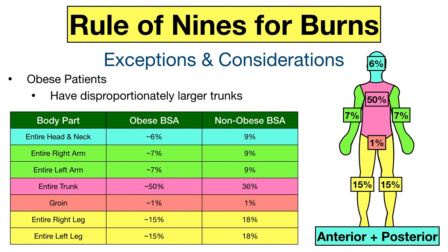The rule of nines can be applied to non-obese adults. Patients defined as obese based on their BMI have disproportionately larger trunks, and the rule of nines is typically inaccurate for them. The body surface area of the trunk in obese patients can be closer to 50% compared to their non-obese counterparts with a trunk of 36%. Due to their disproportionate trunk size, the other body surface area percentages are slightly different in obese patients, as you can see in the table and diagram. The numbers shown are the totals for both the front and back, and these percentages are approximations as they can vary among obese patients.